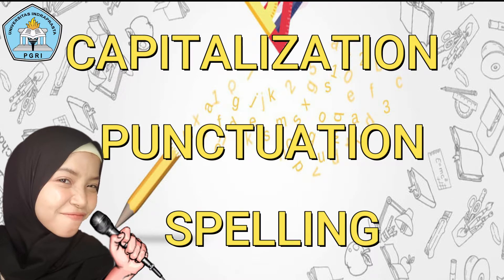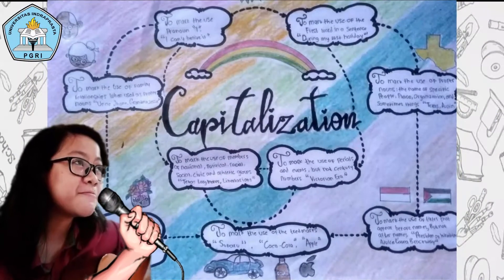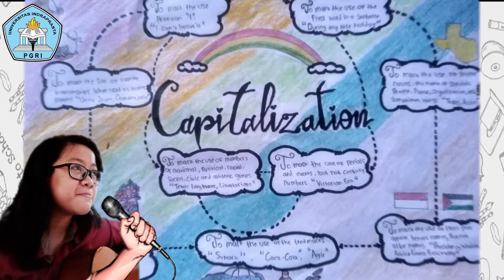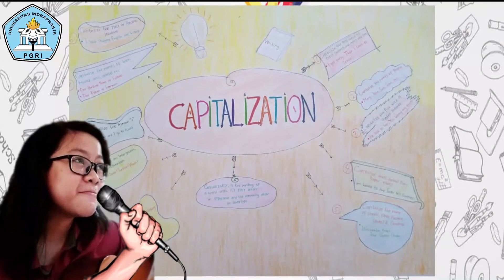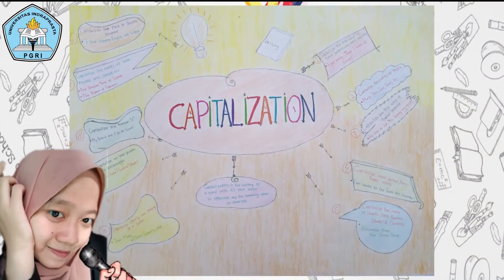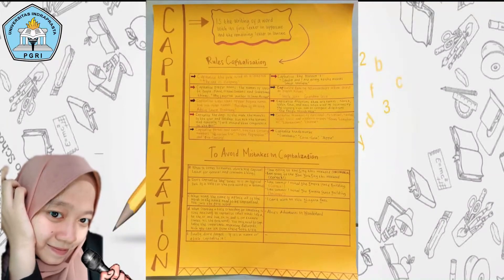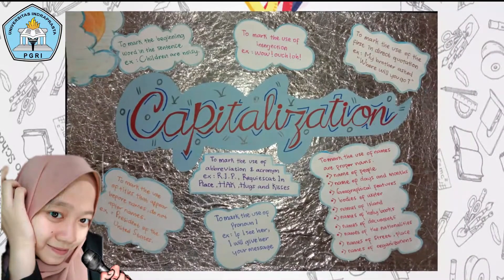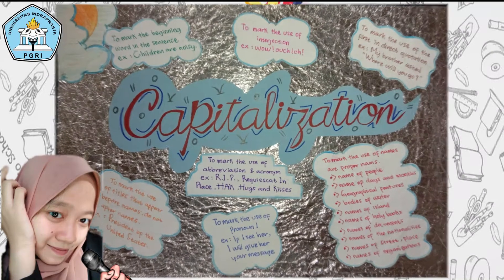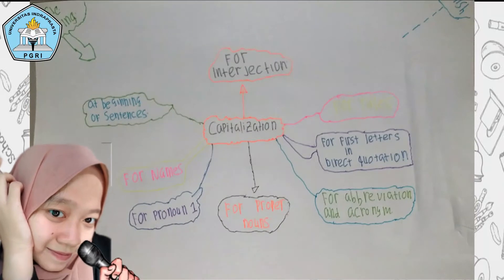Capitalization is the writing of a word with its first letter in uppercase and the remaining letters in lowercase. Example of capitalization: number one, capitalize the first word in the sentence — the example: 'The gate is sleepy.' Two, capitalize the pronoun 'I' — example: 'Sangha and I are going to the movies later tonight.'